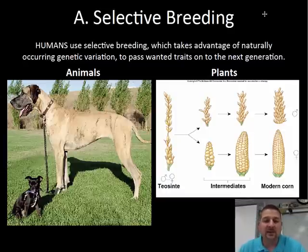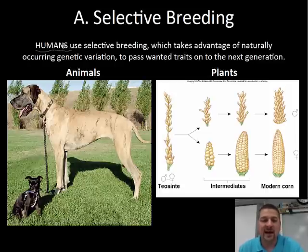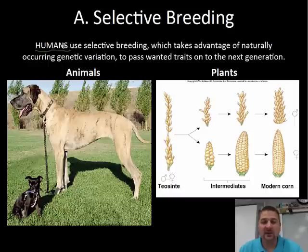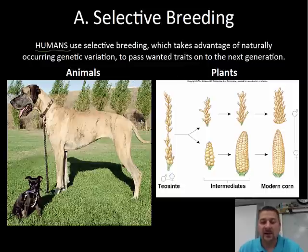Selective breeding is something humans have used for ages. The key term is that this is done by humans. We're using natural variation — the differences we see between individuals. We're both humans, we have differences — and when you breed your animals or plants, you're going to try to breed for traits that you want to keep.